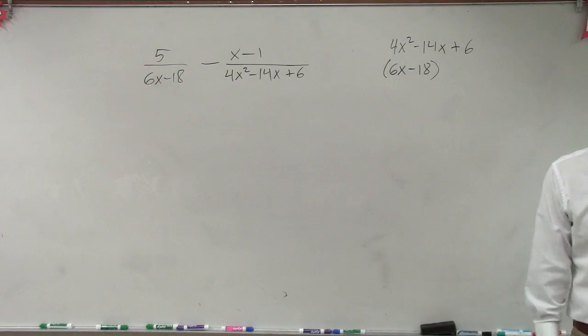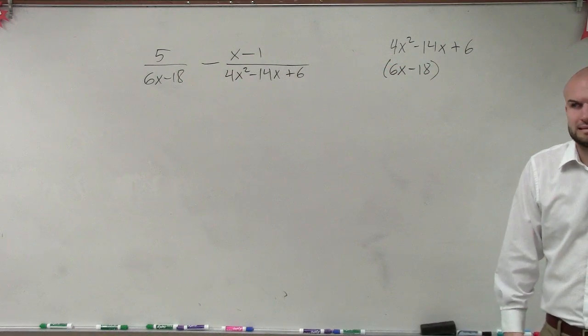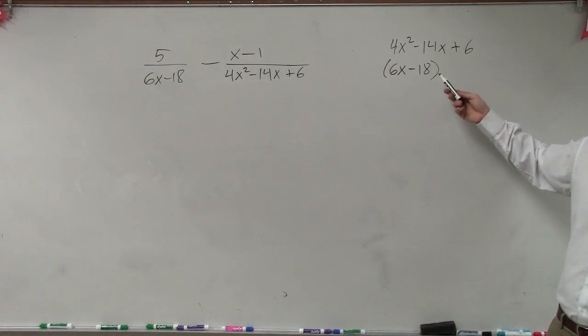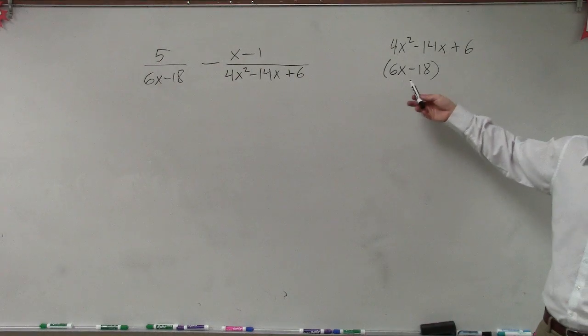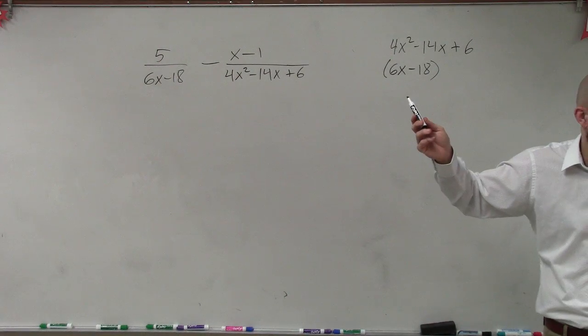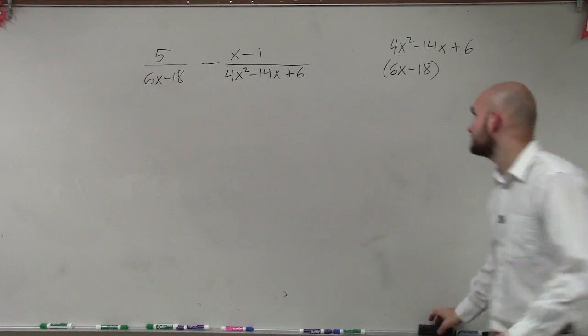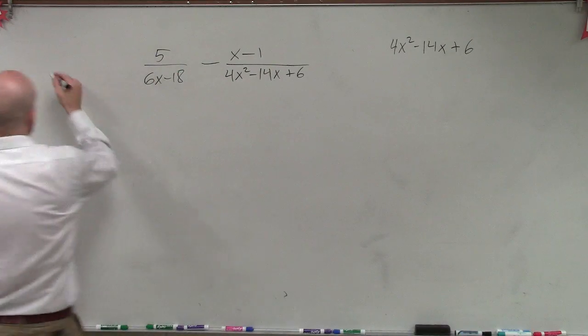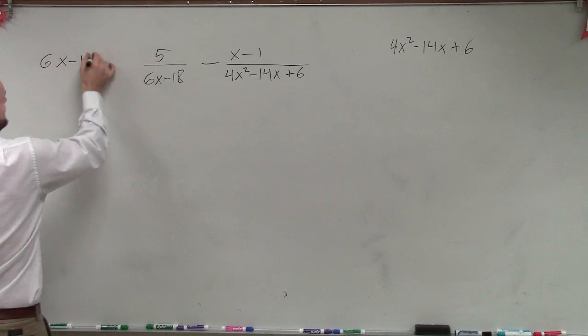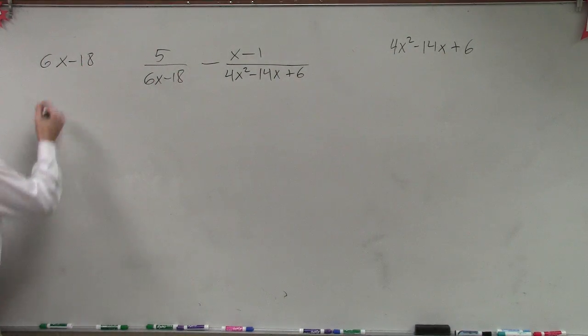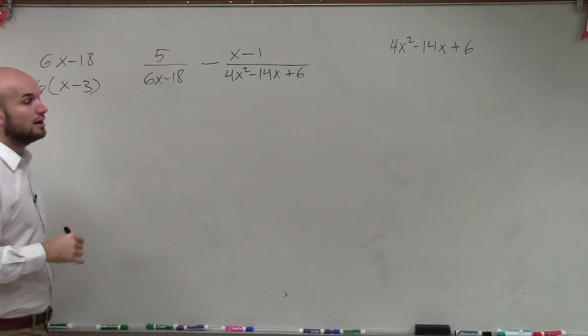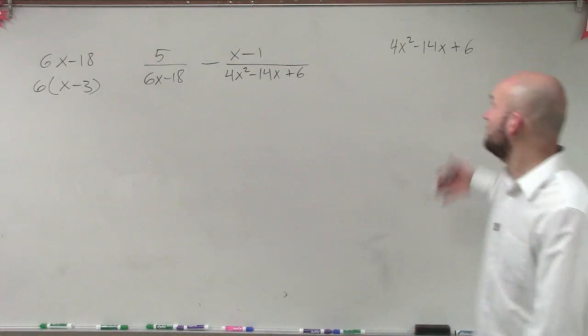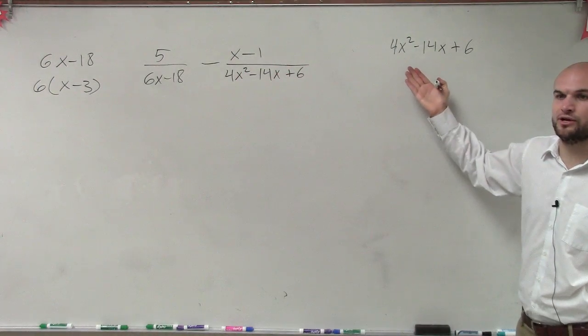However, I could simplify this. Can I factor out a 6 from x minus 18? Yep, it can be 6 times x minus 3. So that could be a possible factor. But if I was going to factor this, what would be the first thing I'd want to do?